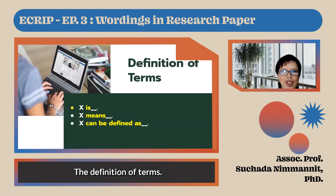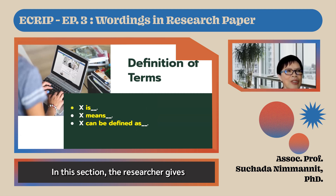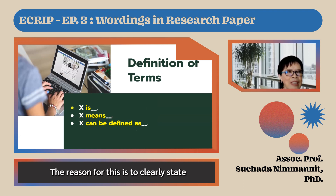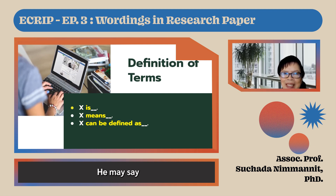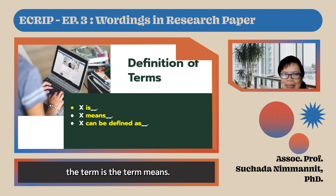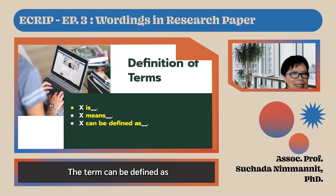The definition of terms. In this section, the researcher gives the definitions of key terms. The reason for this is to clearly state what the keywords or variables are being studied. He may say: 'The term is…', 'The term means…', or 'The term can be defined as…'